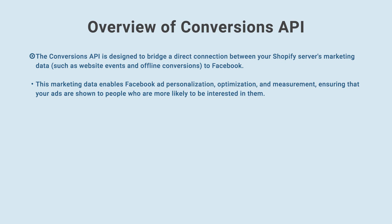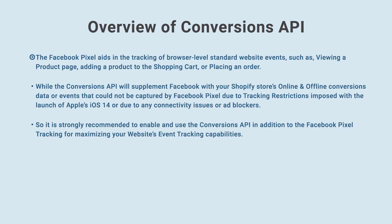Now let's go through an overview of the Conversions API. The Conversions API is designed to bridge a direct connection between your Shopify server's marketing data — such as website events and offline conversions — to Facebook. This marketing data enables Facebook ad personalization, optimization, and measurement, ensuring that your ads are shown to people more likely to be interested in them. The Facebook Pixel aids in tracking browser-level standard website events such as viewing a product page, adding a product to the shopping cart, or placing an order.